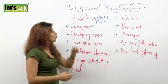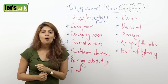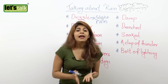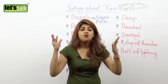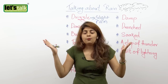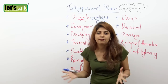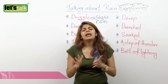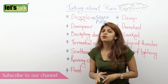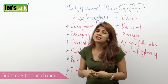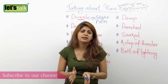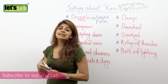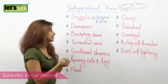The second one: downpour. Now downpour is when it rains heavily. You are outside and it's raining heavily and you'll be like, oh my god, that's like crazy downpour. So downpour is heavy rains.